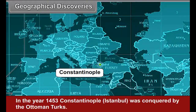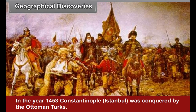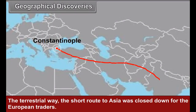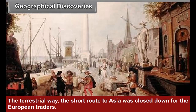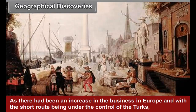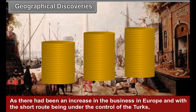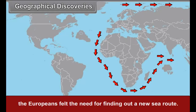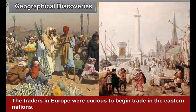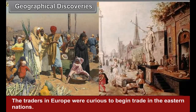Geographical Discoveries: In the year 1453, Constantinople (Istanbul) was conquered by the Ottoman Turks. The terrestrial route — the short route to Asia — was closed down for the European traders. As there had been an increase in business in Europe, and with the short route under the control of the Turks, the Europeans felt the need for finding out a new sea route.